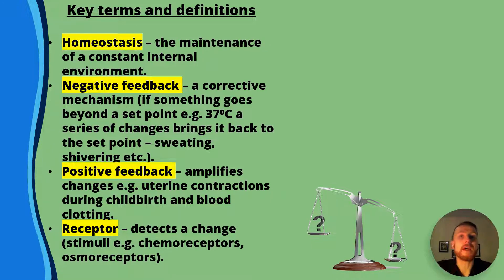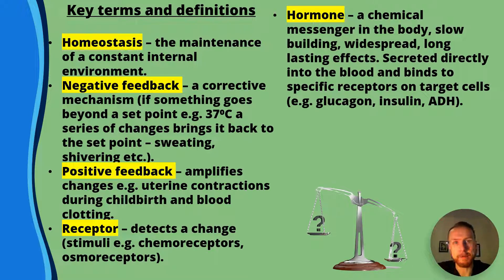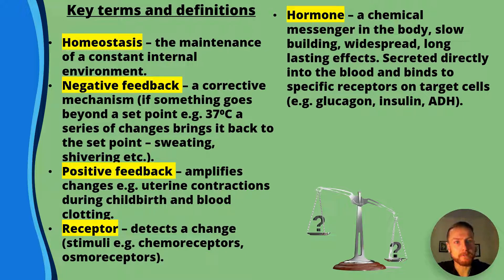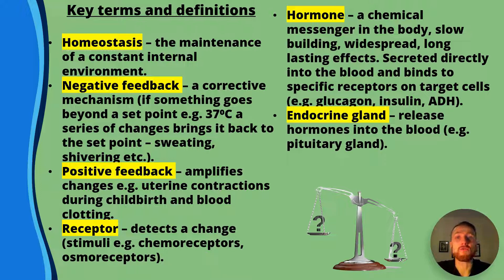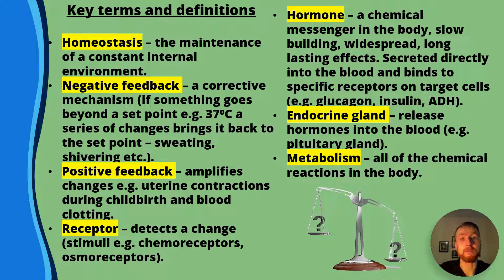Receptors detect changes. Key examples of receptors include the rods and cones in your eye — they're light receptors. You've also got chemoreceptors in the carotid artery, and pressure or mechanoreceptors in the skin known as Pacinian corpuscles. A hormone is a chemical messenger in the body. Compared to nervous transmission it's much slower, but its effects are more widespread and longer lasting. Key examples include estrogen, testosterone, and ADH. They're secreted directly into the blood and bind to specific receptors. Endocrine glands release hormones into the blood — a key example in homeostasis is the pituitary gland, which secretes ADH. Finally, metabolism is all of the chemical reactions in the body.